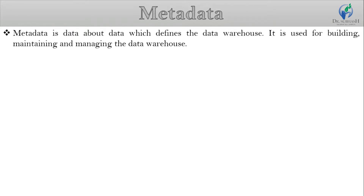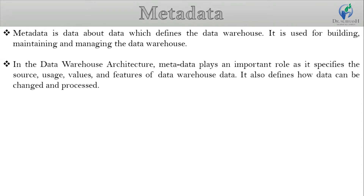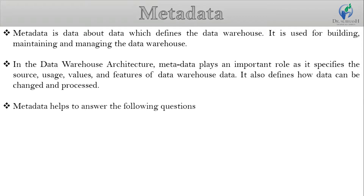The next topic is metadata. The name metadata suggests some high-level technology concept; however, it is quite simple. Metadata is data about data, which defines the data warehouse. It is used for building, maintaining, and managing the data warehouse. In the data warehouse architecture, metadata plays an important role as it specifies the source, uses, values, and features of data warehouse data. It also defines how data can be changed and processed. It is closely connected to the data warehouse, and therefore metadata is an essential ingredient in the transformation of data into knowledge.